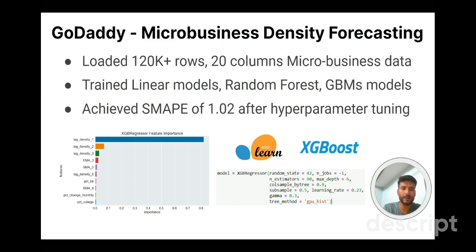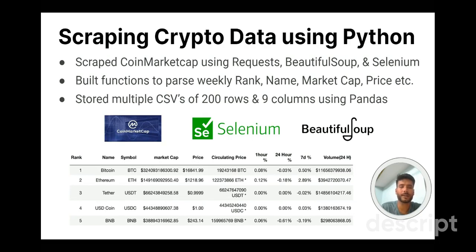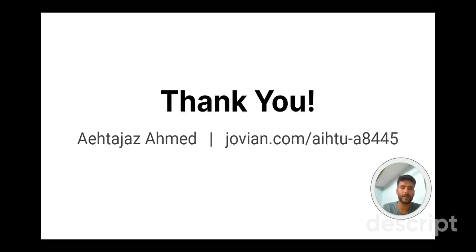Finally, for my third project, I focused on scraping cryptocurrency data. I scraped the CoinMarketCap website to extract weekly historical snapshots of cryptocurrencies using Request, BeautifulSoup, and Selenium. I built functions to scrape information such as names, market cap, price, circulating supply, and percentage change. I stored 200 rows and 10 columns of data as a CSV using Pandas. Overall, I am excited to continue learning and exploring the field of data science. To know more about my projects and me, please check my profile. Thank you for your time and thank you Jovian.